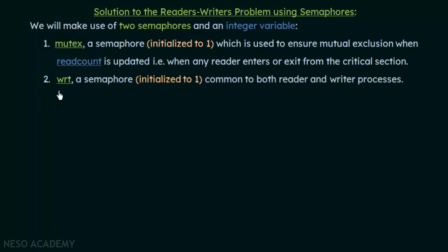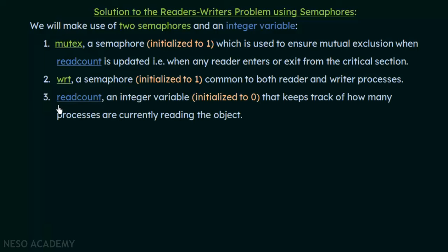The second semaphore is WRT, which we'll call WRITE, also initialized to one. It is common to both the reader and writer processes and will take care of controlling write access. The integer variable read_count — not a semaphore — is initialized to zero and keeps track of how many processes are currently reading the object.